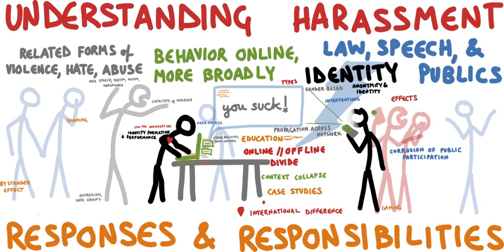The content of websites and other electronic communications may be distasteful, obscene or offensive for a variety of reasons. In some instances these communications may be illegal. The extent to which these communications are unlawful varies greatly between countries, and even within nations. It is a sensitive area in which the courts can become involved in arbitrating between groups with strong beliefs. One area of internet pornography that has been the target of the strongest efforts at curtailment is child pornography, which is illegal in most jurisdictions in the world.